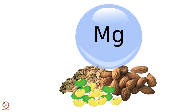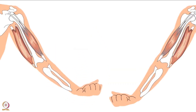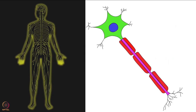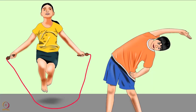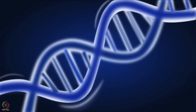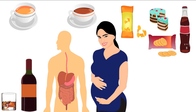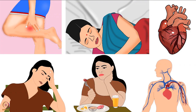Minerals are also needed for strong immunity and production of thyroid hormones. Magnesium is an essential mineral needed by the body. It is required for muscle relaxation and helps in sending and receiving messages by the central nervous system. This nutrient is required for healthy bones and teeth as well. We also need magnesium for energy production and DNA synthesis.